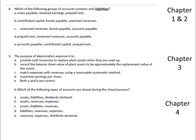Well, notes payable is a liability, but retained earnings is not a liability, and prepaid rent is not a liability since it's an asset, so it's not A. B, contributed capital is not a liability, bonds payable is a liability, as is unearned revenue, but it's not B.